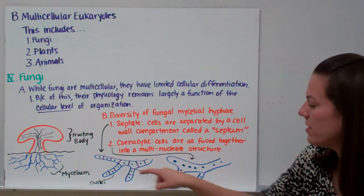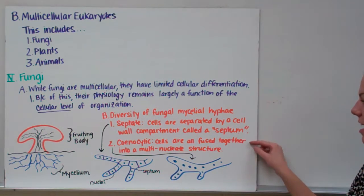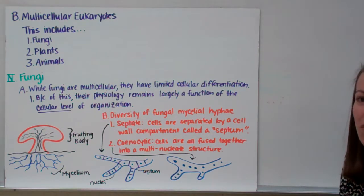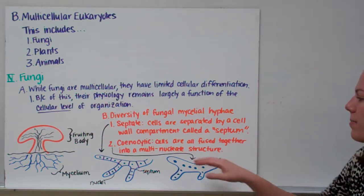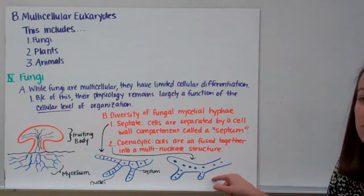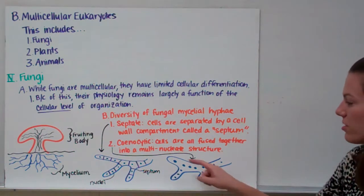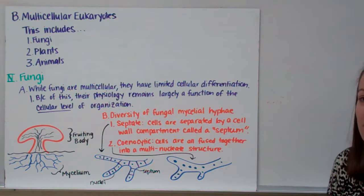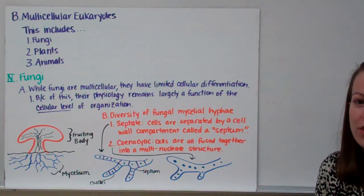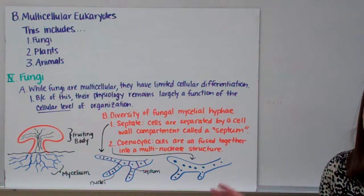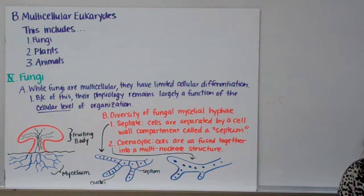In syncytic mycelial hyphae, the cells are actually fused together — they don't have that septum separating them — and so they form a multinucleate structure. That's it for our introduction to physiology part one. Stay tuned to talk about plants and then animals.